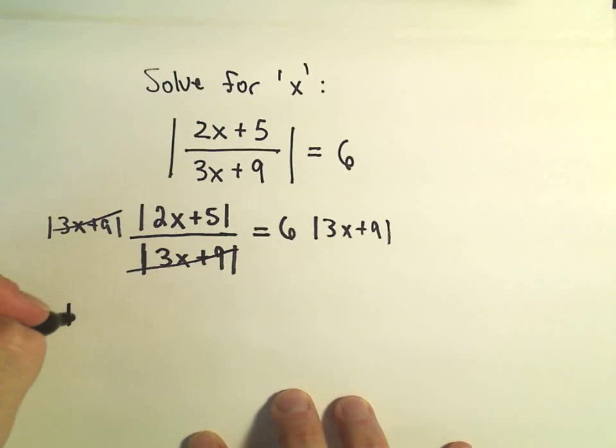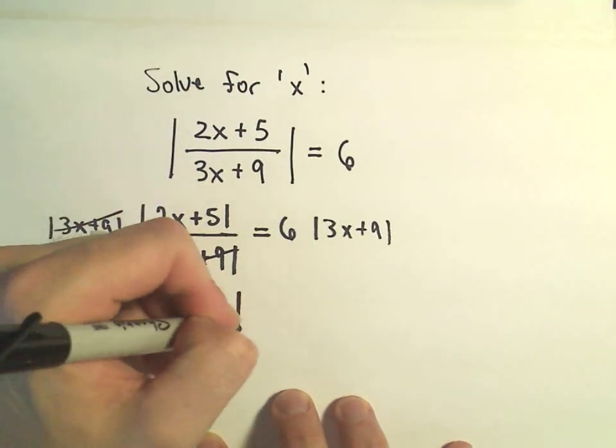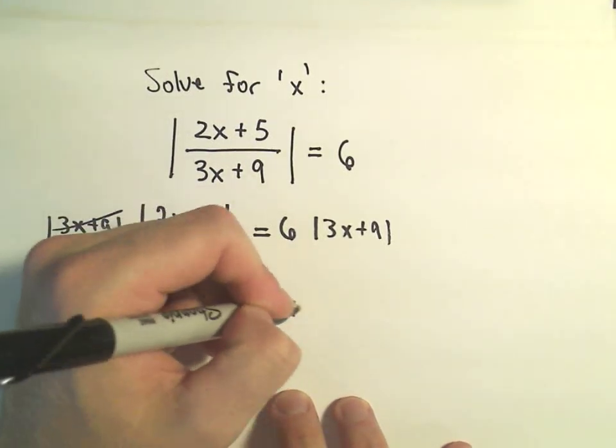So it cancels on the left, so we're left with the absolute value of 2x plus 5 equals 6 times the absolute value of 3x plus 9.